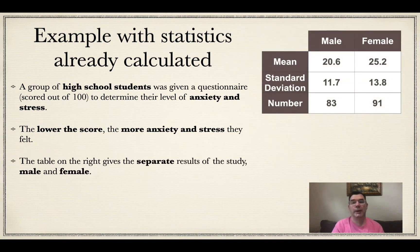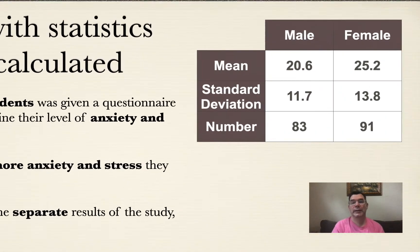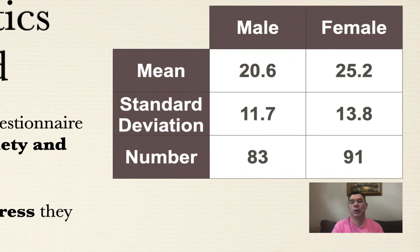So here are the statistics that I found. I didn't give a whole list of the scores, but the males had a mean score of 20.6. The standard deviation was 11.7, and the number of males that I was giving the questionnaire to was 83. For the females, the average score was 25, and the standard deviation was 13.8, and the number of females that were given the questionnaire was 91.